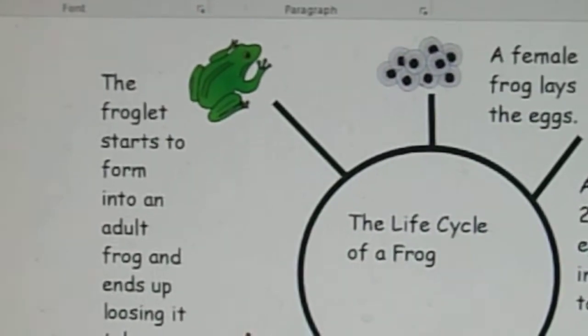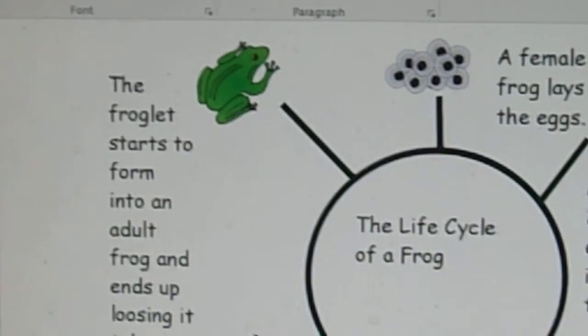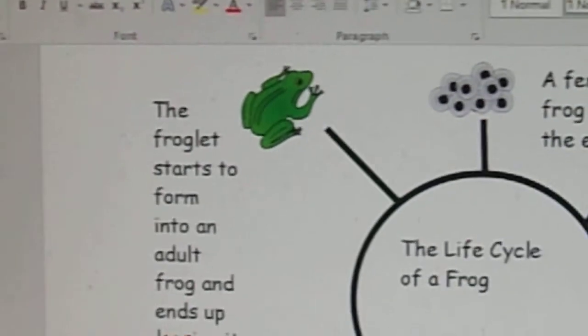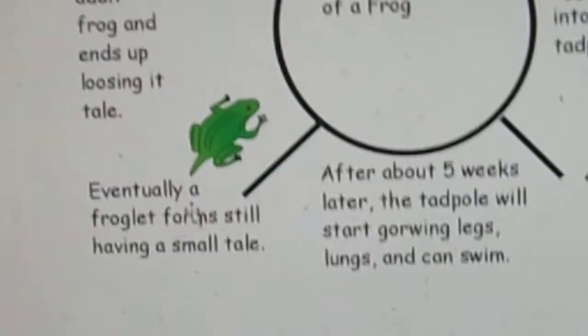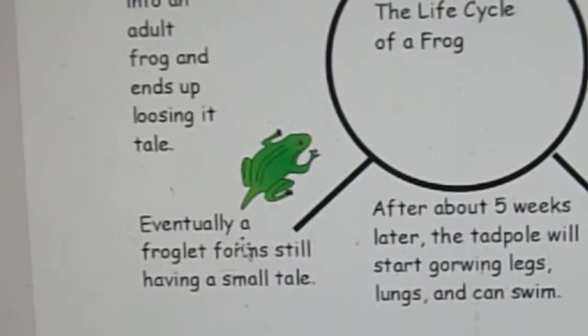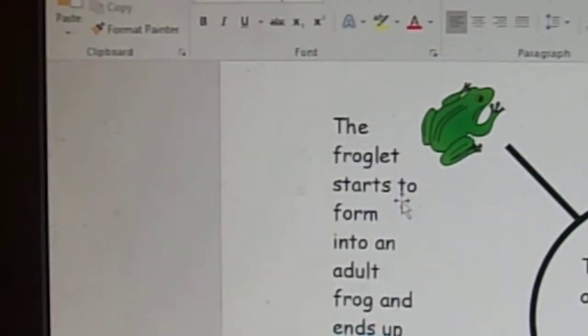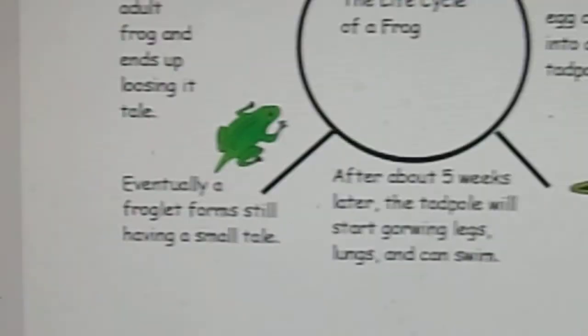Legs. And then after the tadpole, it starts to grow into a young frog with a tail, and then it starts to turn into an adult frog. All right, Louis.